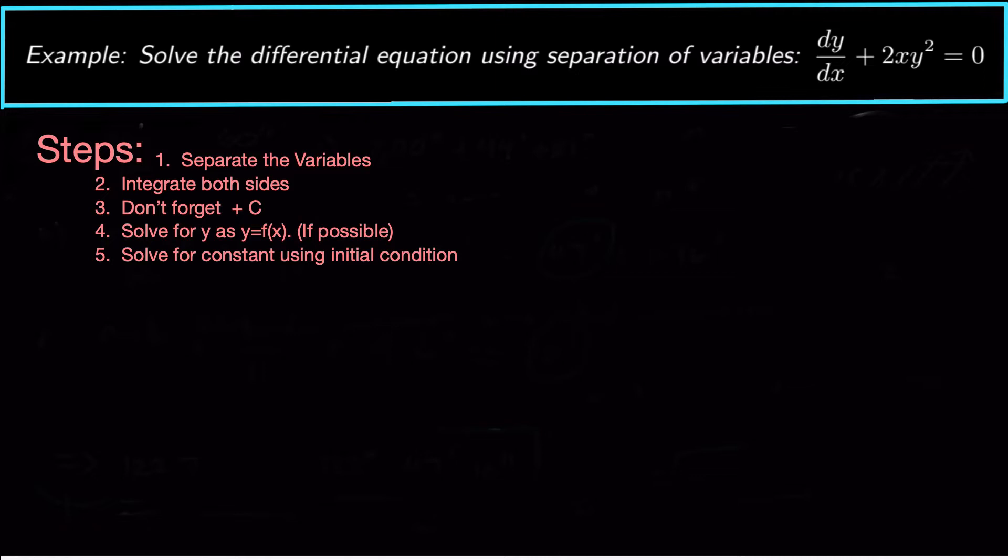Then the next step is don't forget the plus c. When you do the integration you're going to need a plus c either on the left or the right. It doesn't matter where you put it but you just need a plus c on one of the sides. The next step is to solve for y as a function of x and then solve for the constant of integration using the initial condition. Here we don't have initial conditions so we don't have to worry about step five.